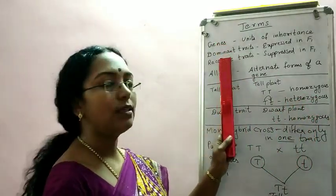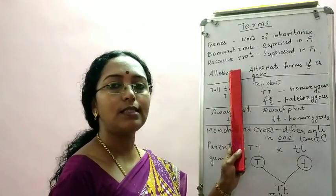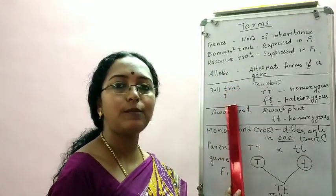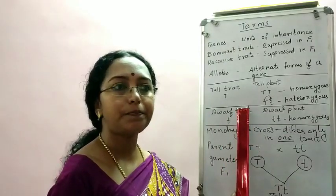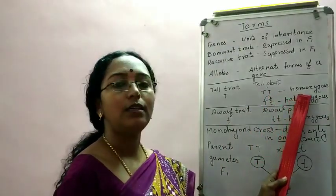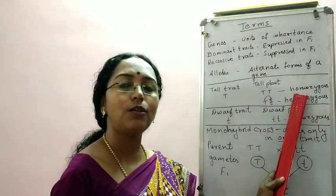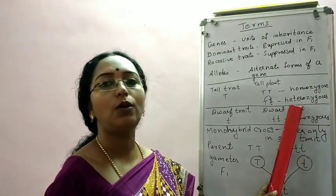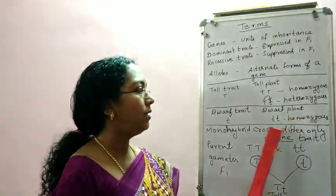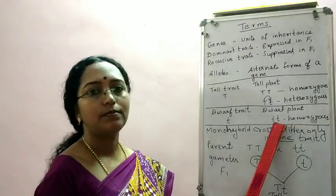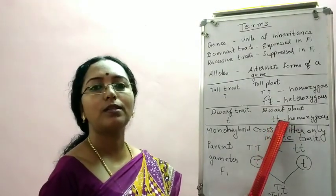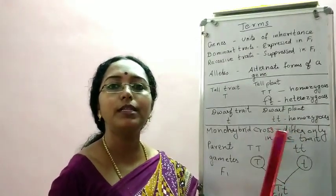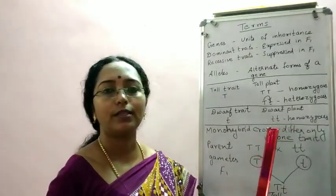So to recap the terms: genes, dominant trait, recessive trait, alleles — expressed as letters. You have homozygous dominant as well as heterozygous dominant plants. But for the recessive, we can only express it as small t, small t — it is always homozygous. So recessive is always homozygous.